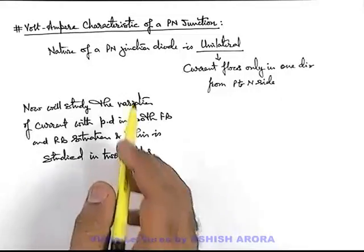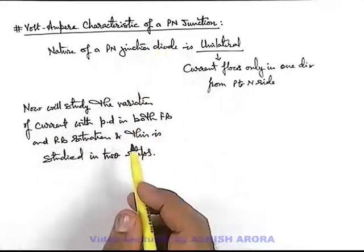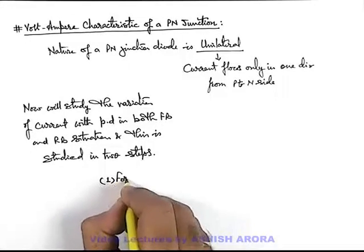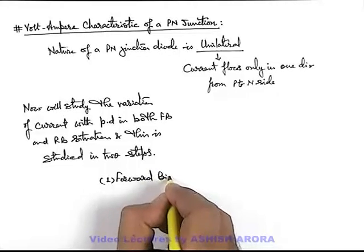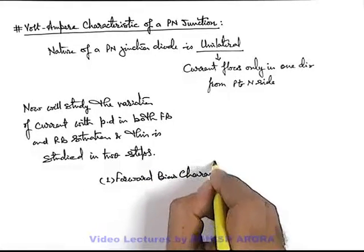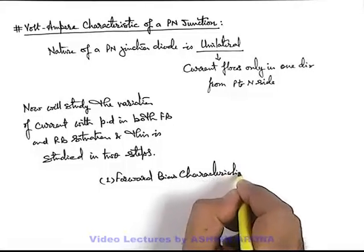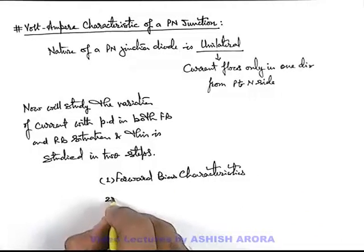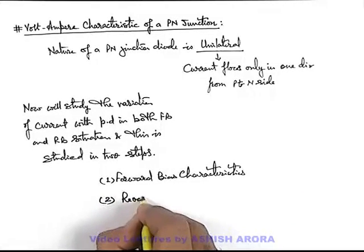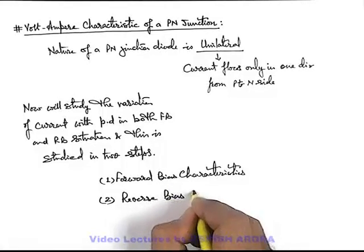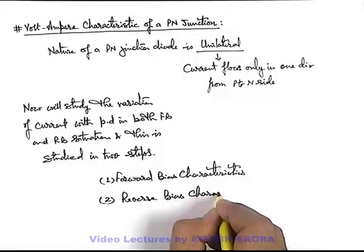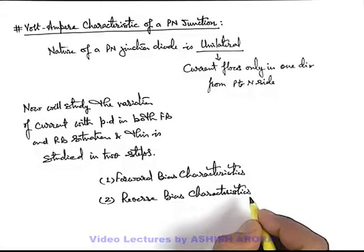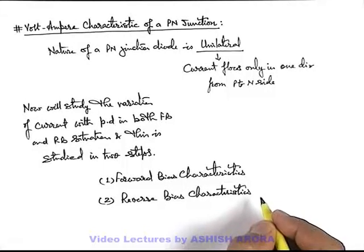These two steps are the forward bias characteristics and reverse bias characteristics. Forward bias characteristics is the variation of current with voltage when the PN junction diode is forward biased, and reverse bias characteristics is the study of variation of current with potential difference when the PN junction is reverse biased.